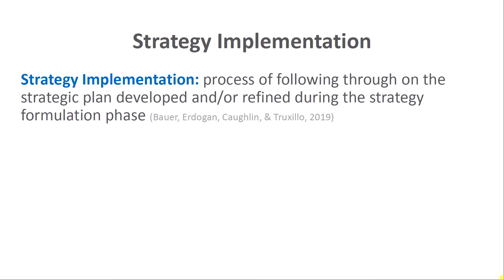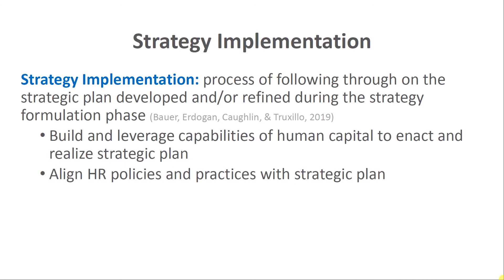After we have that strategic plan in place, we're ready for strategy implementation — the process of following through on the strategic plan that was developed during the strategy formulation phase. Strategy implementation involves building and leveraging the capabilities of human capital to enact that strategic plan and its strategic objectives. This is where human resource management comes into play, housing the systems, policies, and practices that help manage and leverage the capabilities of our people, aligned with the strategic plan.